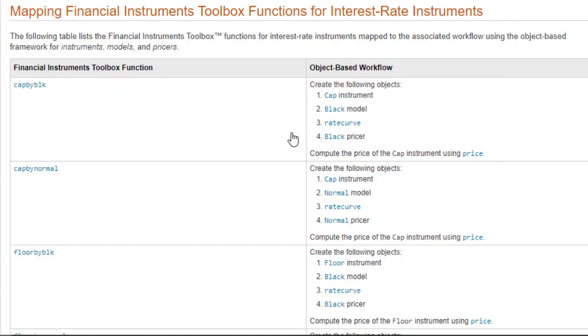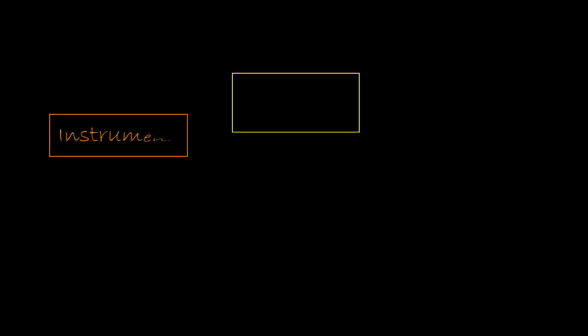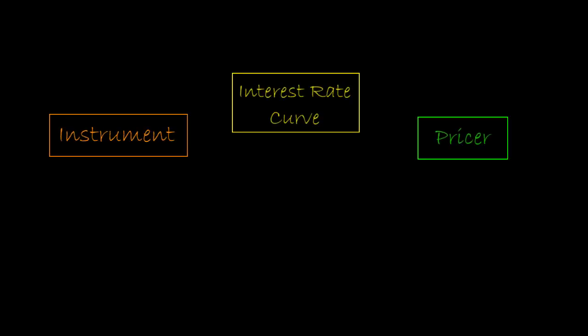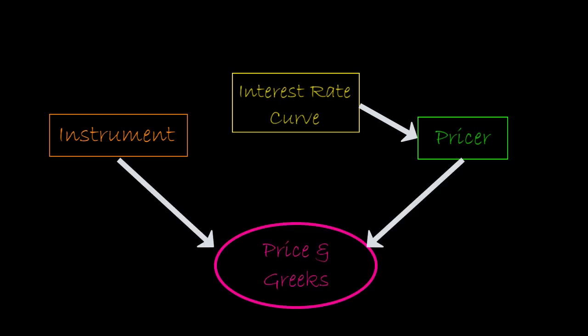Let me quickly summarize the workflow for using the object-based framework. In most cases, you need to create three objects: instrument, rate curve, and pricer. Then compute the price and Greeks of a single financial instrument. But if you want to price instruments with optionality — such as options, caps, floors, swaptions, and option-embedded bonds — you will need to create a model object to specify which model you want to use for pricing.